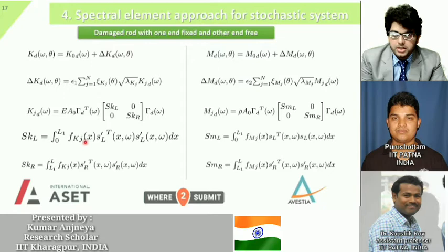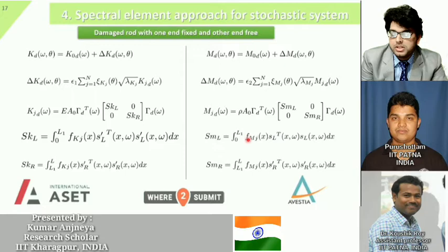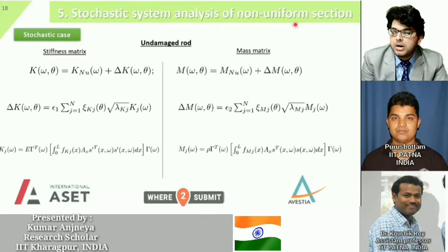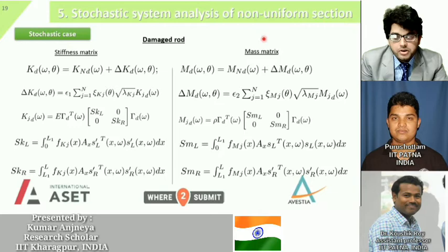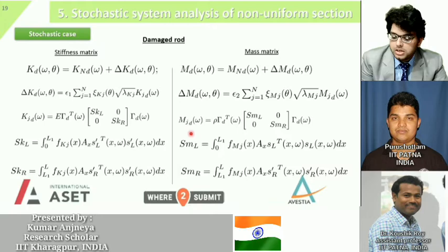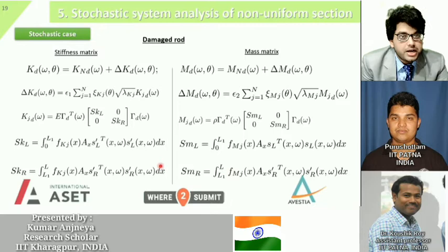For the damaged case, expressions are written for the left and right regions, with the F_Mg parameter inside the integration. For the mass matrix, the random mass factor similarly includes F_Mg inside the integration. For non-uniform sections under uncertainty, the stiffness and mass matrices include both the F_Kj parameter and the area A(x) expression inside the integration — for both left and right of the damage location — covering all combinations of damage, non-uniformity, and randomness.